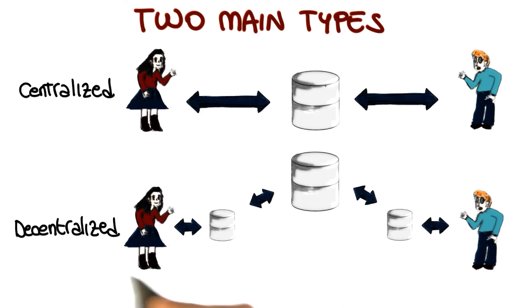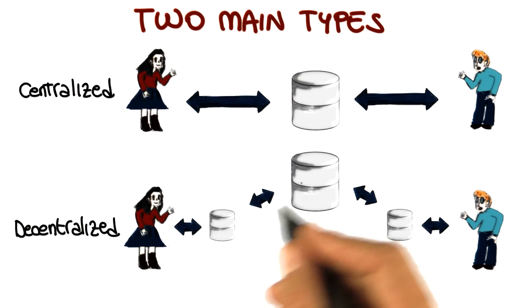With the distributed, with the decentralized VCS, you can commit your local changes here in your local repository, and you can push them to the central repository only when you're ready.